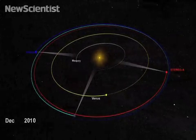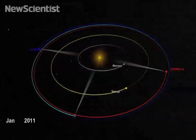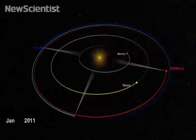Now STEREO A and B are almost exactly opposite each other, and for the first time in human history, we have a view of the entire Sun.